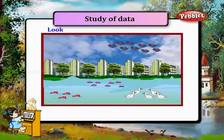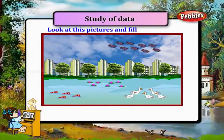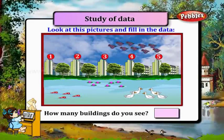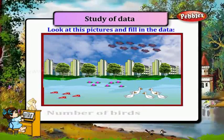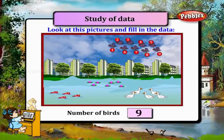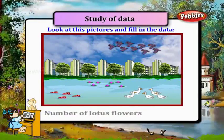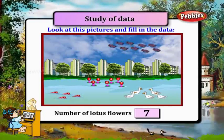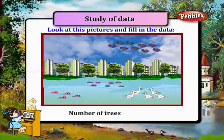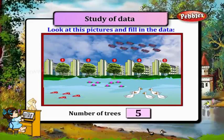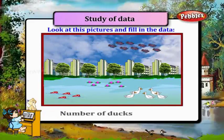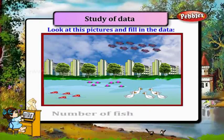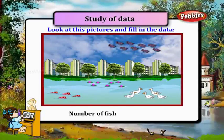Now look at this picture and fill in the data. How many buildings do you see? 5. Number of birds? 9. Number of lotus flowers? 7. Number of trees? 5. Number of ducks? 5. Number of fish? 4.